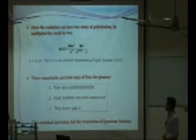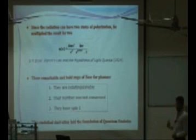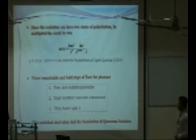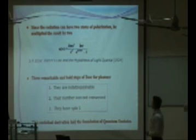Bose wrote a manuscript titled 'Planck's Law and the Hypothesis of Light Quanta' and sent it to Einstein. Einstein immediately recognized it as a remarkable work and a big step toward quantum statistics, and promptly translated and published it. The bold steps taken by Bose — treating particles as indistinguishable, not conserving their number (since these are photons), and assigning spin 1 — allowed him to derive Planck's law and thereby lay the foundation of quantum statistics.